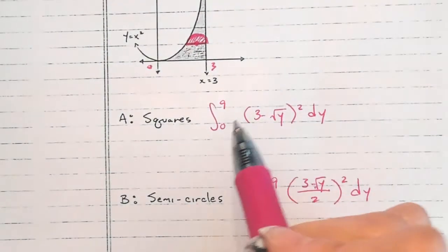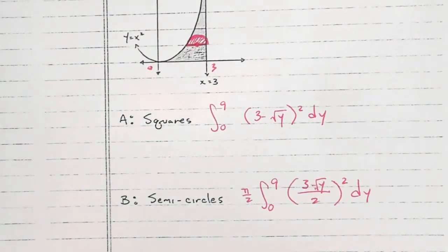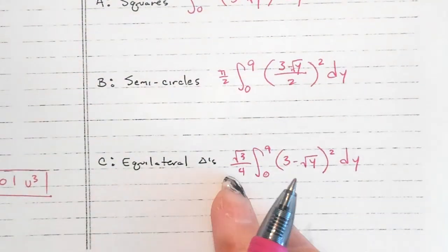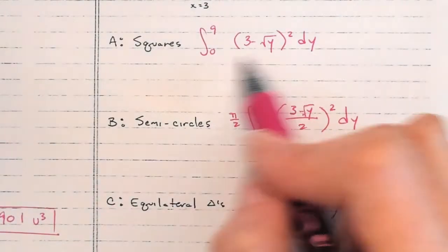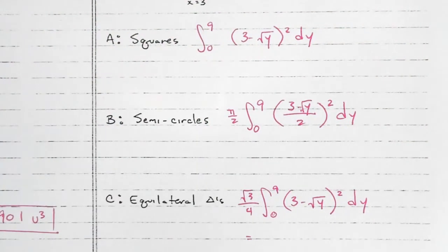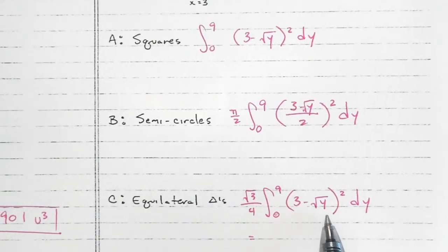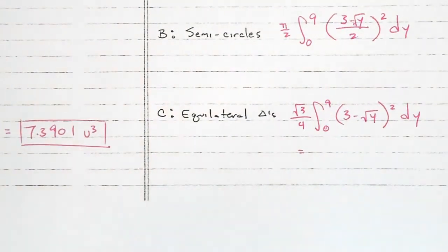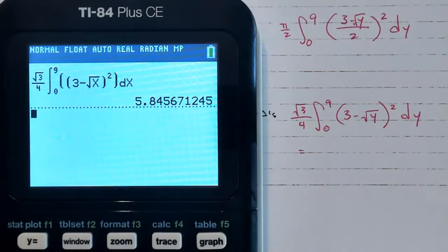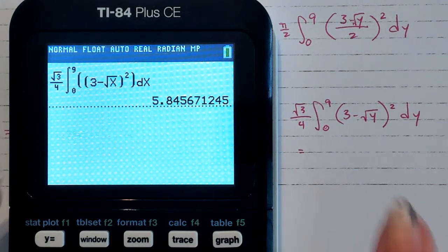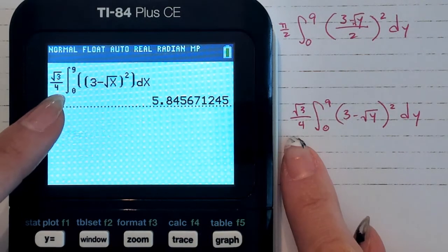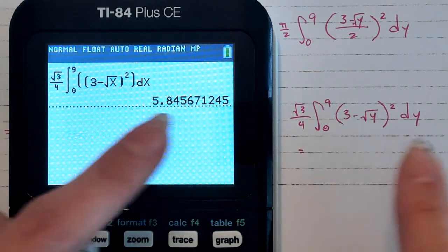My circles look almost the same as squares, just with π/2 out front. Equilateral triangles look almost the same but with √3/4. I want you to be able to plug this into a calculator — there are no y's in the calculator, so you use x's. Let me do it with you. Math 9 to access the integral function.